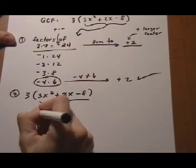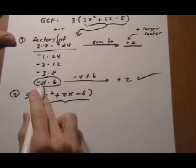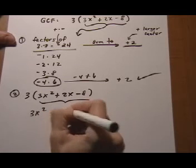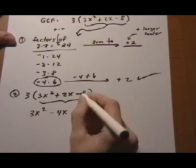So I have 3x squared, break up the 2x into minus 4x plus 6x, and bring the minus 8 down.